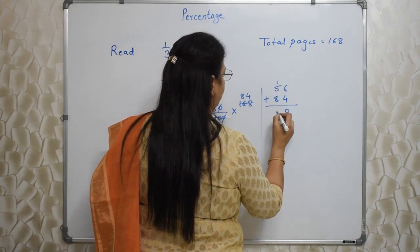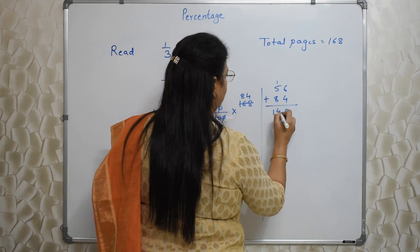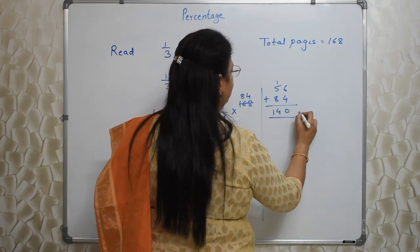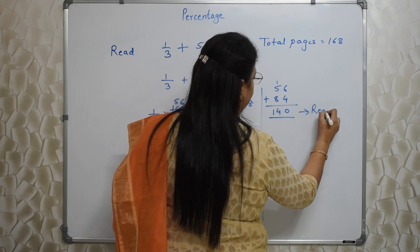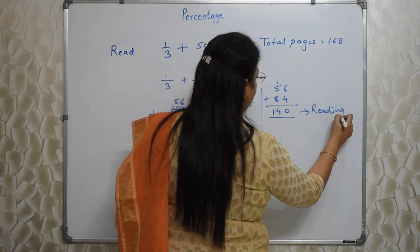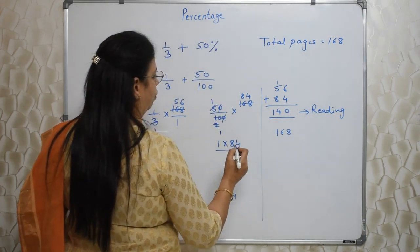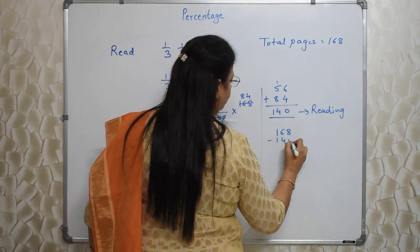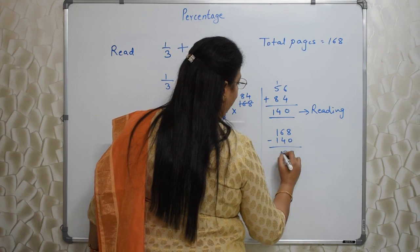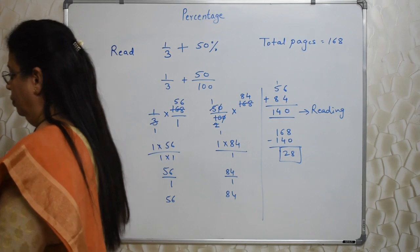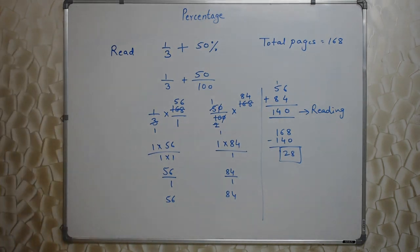How much is the total? 140 ho gaya hai. This much reading is done, over. So how many are remaining? 168 total pages hai book mein. Out of that 140 is over. So 28 pages are remaining. This is the answer.